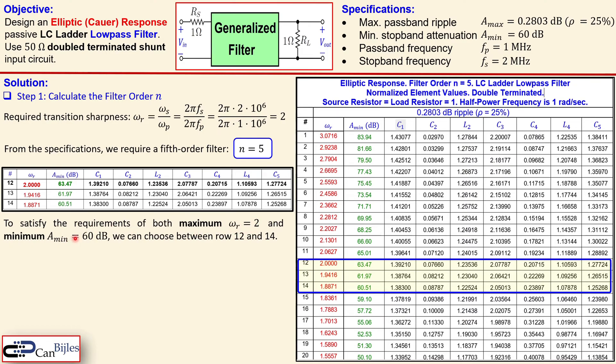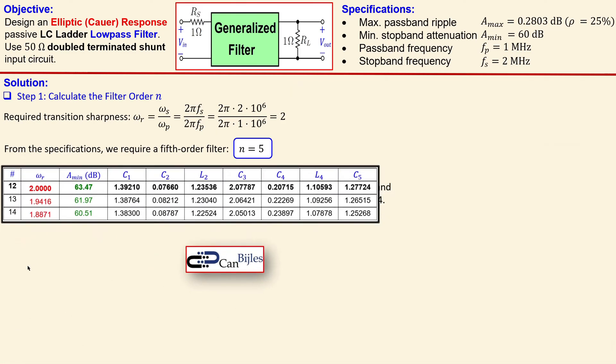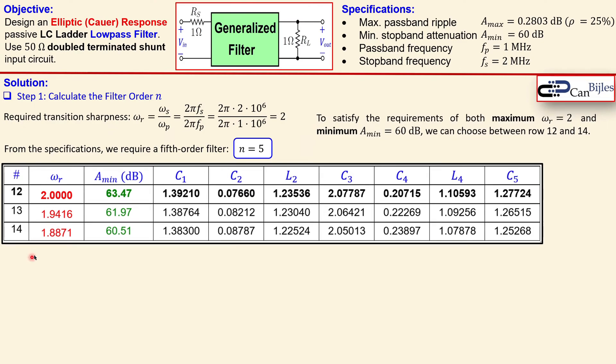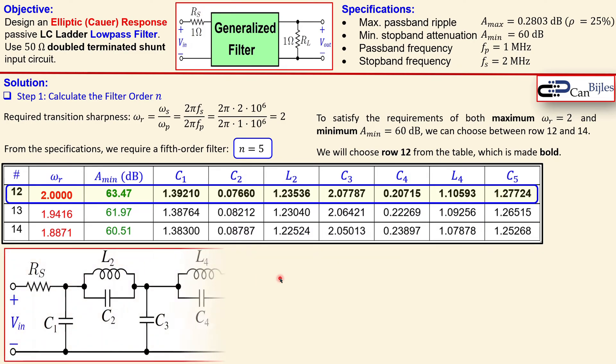So to satisfy the requirements I said before, we need to have a maximum of ω_r=2 and a minimum of 60 dB. Now we can choose a set between rows 12, 13, and 14. So in this case I will go for row 12, which is this one, and that's actually made bold here. So these are the coefficients for our circuit, this one, and this is actually the circuit. You can see this is the fifth order, this part.